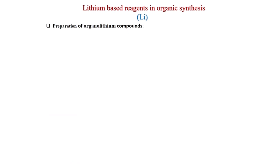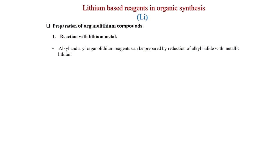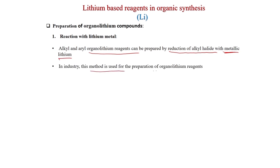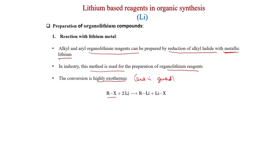First, preparation of organolithium compounds by reaction with lithium metal. Alkyl and aryl organolithium reagents can be prepared by reduction of an alkyl halide with metallic lithium. In industry this method is commonly used and the conversion is highly exothermic, so a lot of heat is generated. If the alkyl halide reacts with two equivalents of lithium metal, you get R-Li and lithium-X. For example, n-butyl bromide plus 2 lithium gives n-butyl lithium plus lithium bromide.